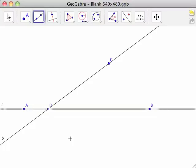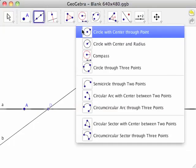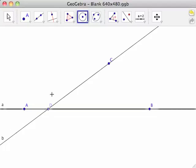Select the Circle with Center Through Point tool from the circle toolbar and click on point D to place the center at point D, then click on line AB a short distance away from point D. This creates point E and circle C.